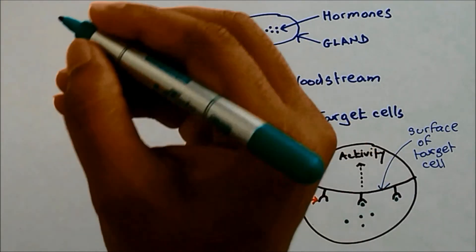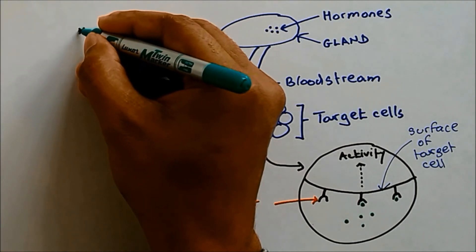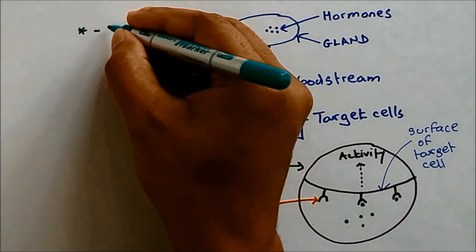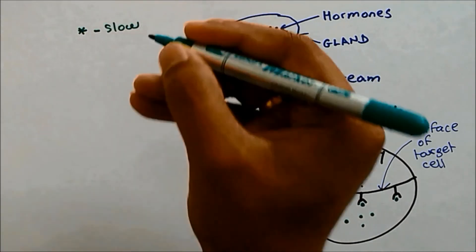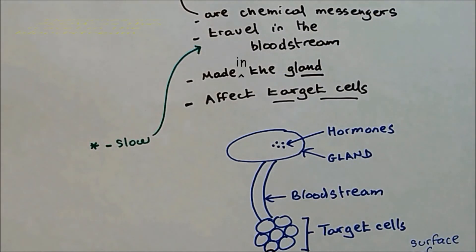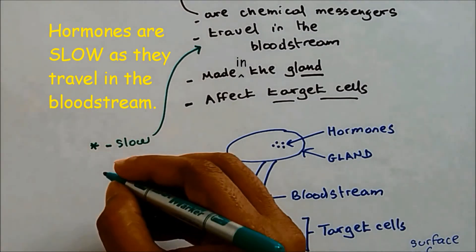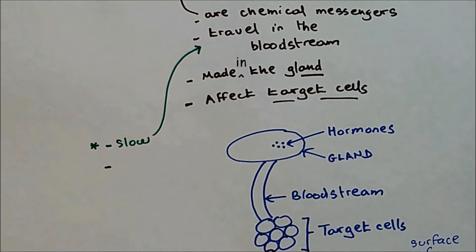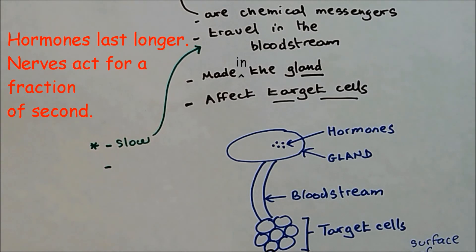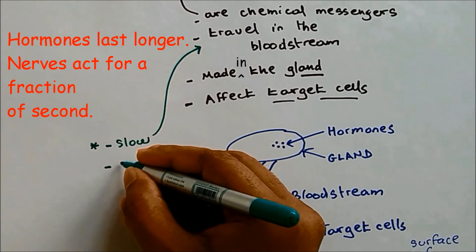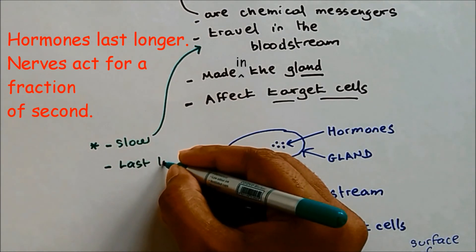Other things to learn about hormones: they are very slow — not as quick as the nervous system, where nerve impulses can travel very quickly. But unlike nerves, which have only a short-duration effect, hormones have a long-lasting effect.